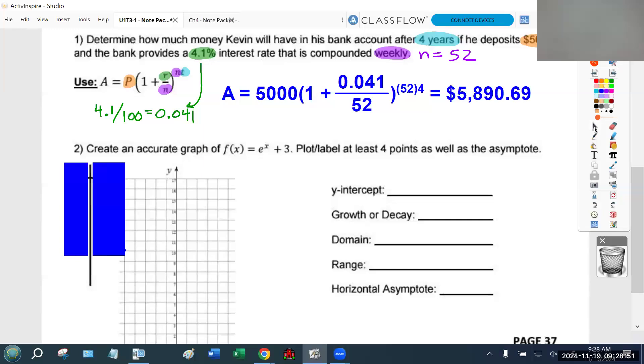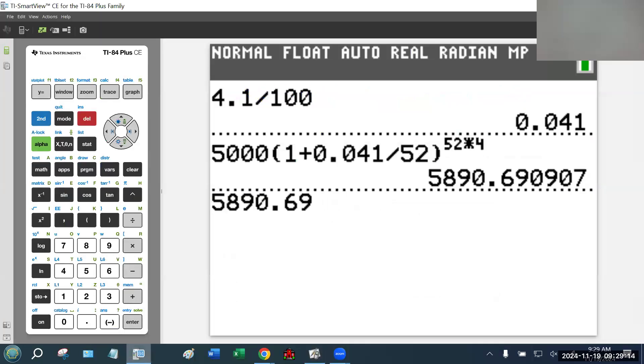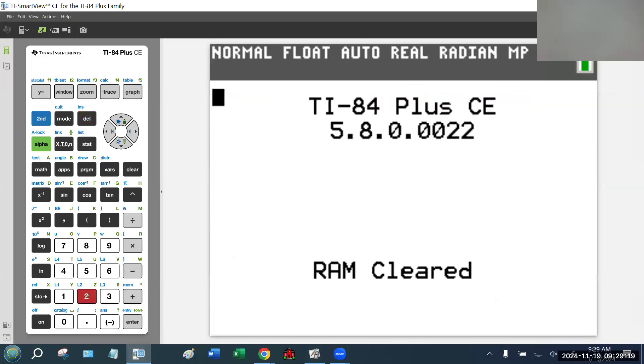That is one style of question that's going to be on the CFU. The other style is, can you create a graph and identify its features? The next question says create an accurate graph of f(x) = e^x + 3, plot at least four points as well as the asymptote. I would always recommend you reset the calculator, second plus 712, just as a way of protecting yourself.